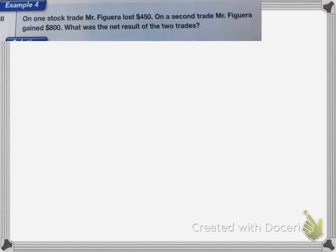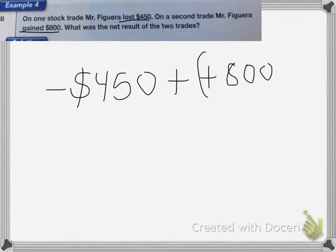On this one we have one stock trade. Mr. Figura lost $450. On a second trade, he gained $800. What was the net result of the two trades? When dealing with money, if we have a loss, we represent that as a negative number. So he lost $450, that's going to be negative $450. But then he gained $800, so we're going to add positive $800.